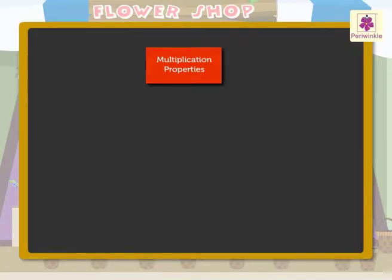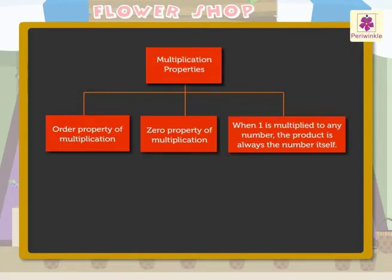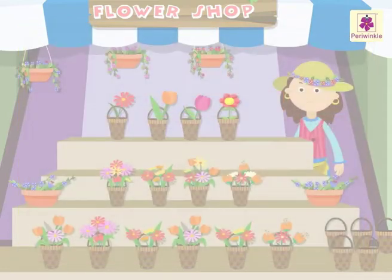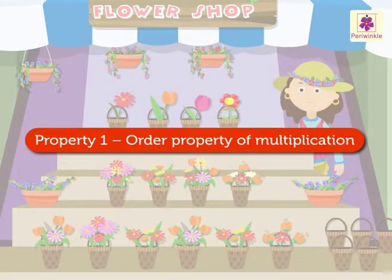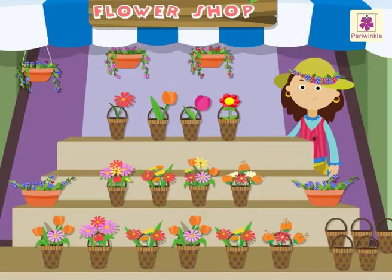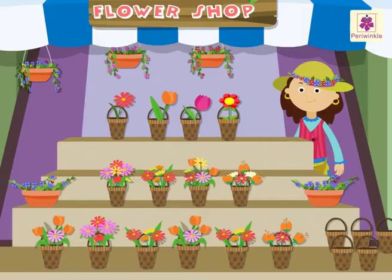There are three multiplication properties. They are commutative property, zero property, and identity property. Let us take an example in Rosie's shop and check this property.